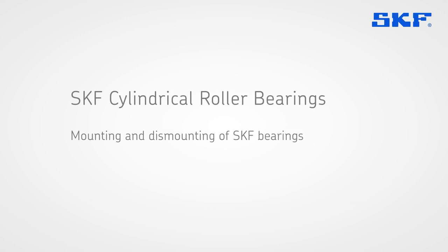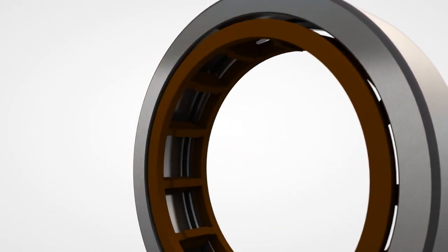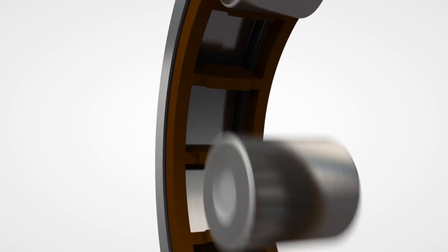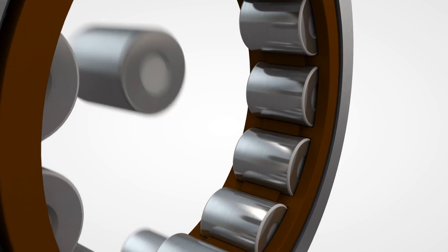This SKF training film is about cylindrical roller bearings. The most common cylindrical roller bearing consists of a flanged outer ring, a separating cage and a number of rollers. The floating inner ring completes the bearing.